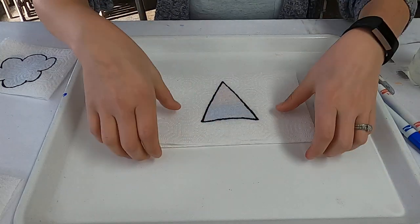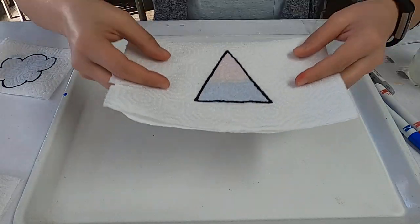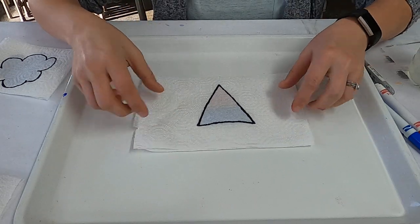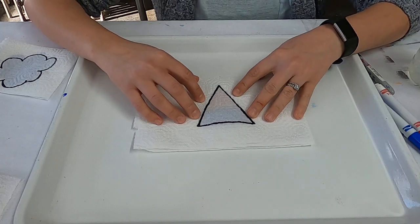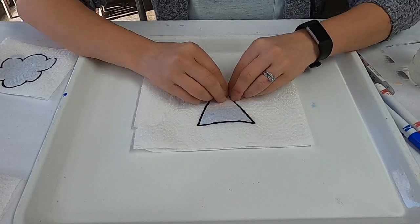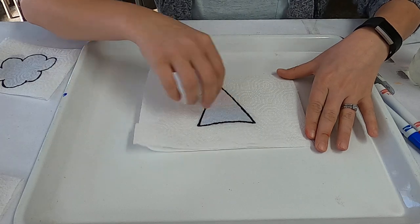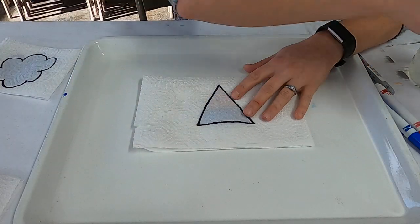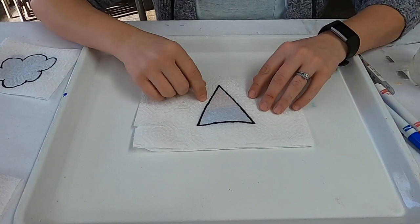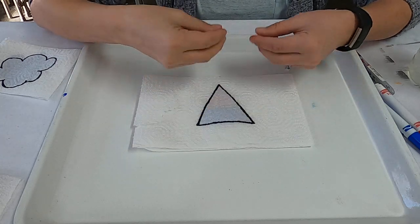One way is, you could actually submerge this whole thing in a shallow dish of water. That's obviously the most messy way. And the colors will actually bleed all over. It'll bleed outside of this. Or you can use a spray bottle, and just spritz some water on it, and watch it soak up.